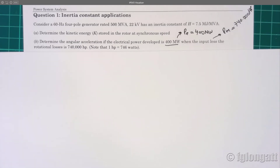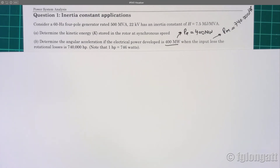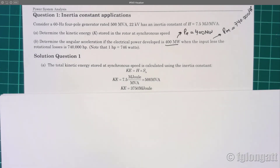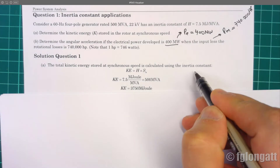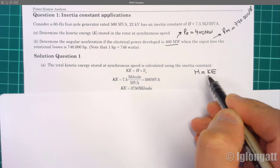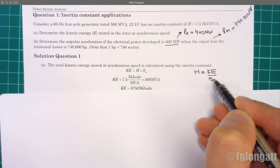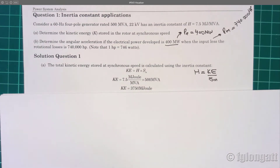Many people watching my YouTube channel may not remember the conversion between watts and horsepower. What you need to remember is that one horsepower is equivalent to 746 watts. Now let's solve this problem — this is something very basic. The first part is simple because all of you must remember the definition: the inertia constant is the kinetic energy stored at synchronous speed based on the rated power in MVA.